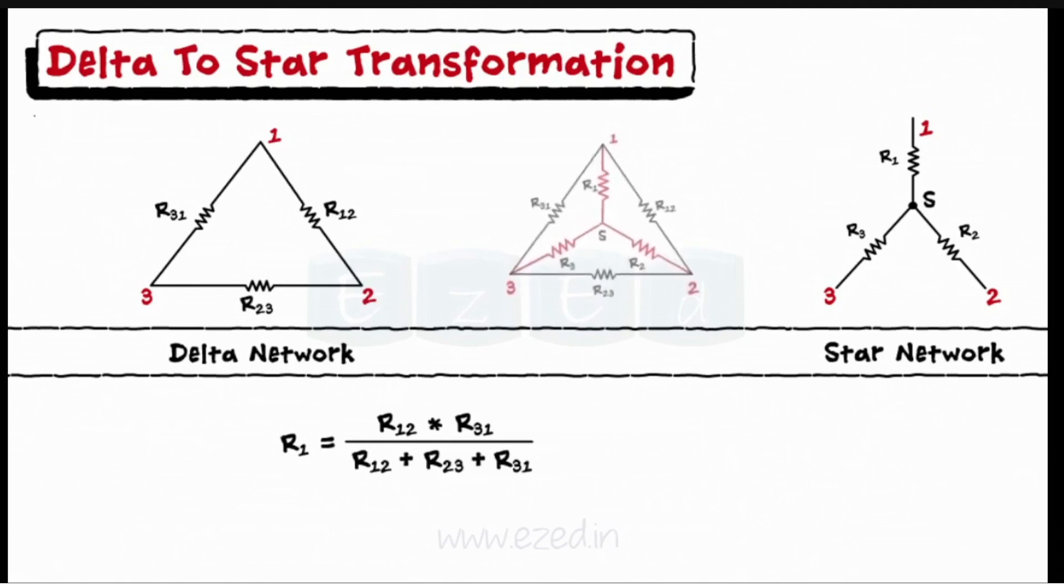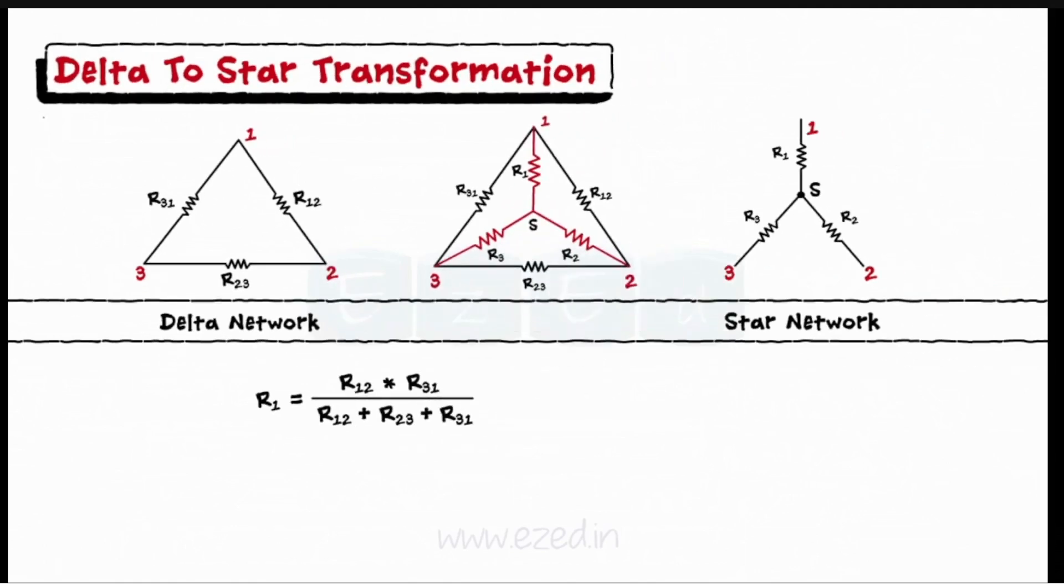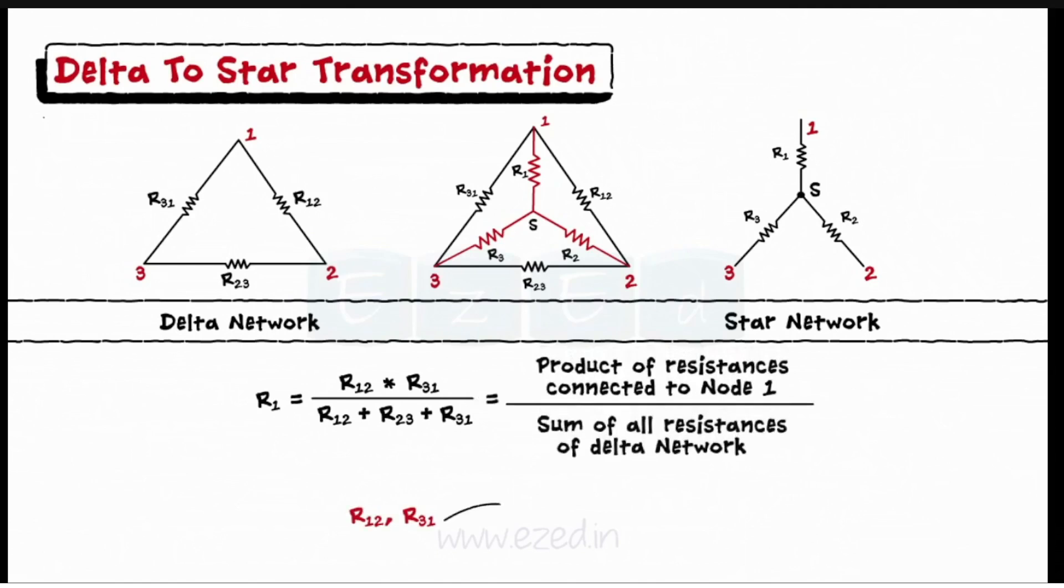Let's see how to remember this formula. We want to find R1 of star from delta network. Thus, always take the product of all those resistors which are connected to terminal 1 of delta upon the sum of all resistances of delta.